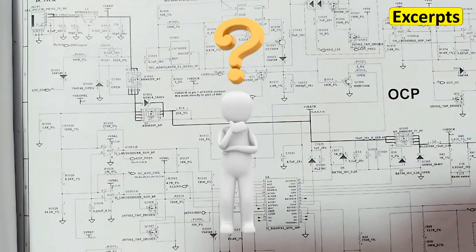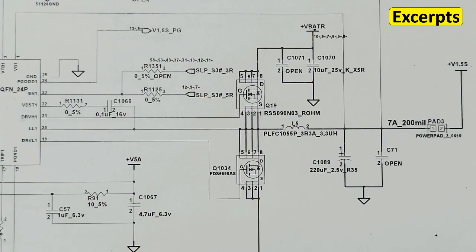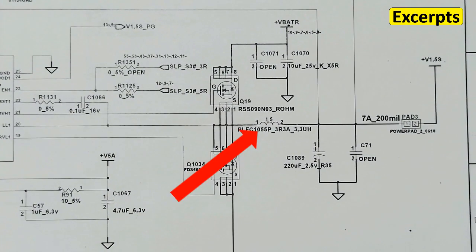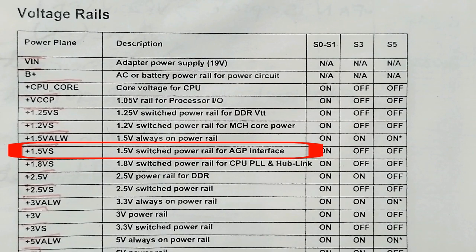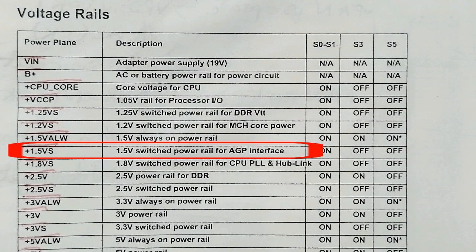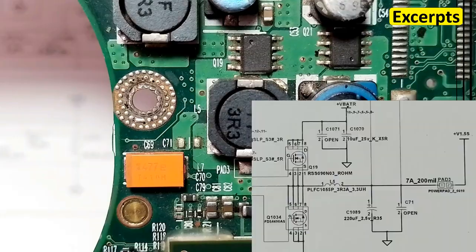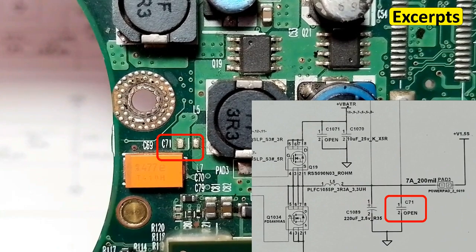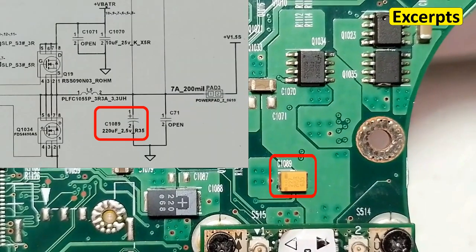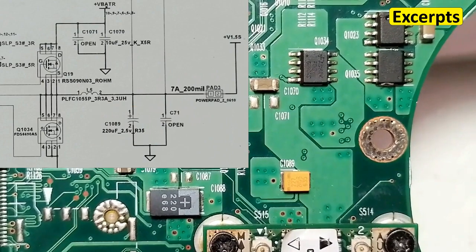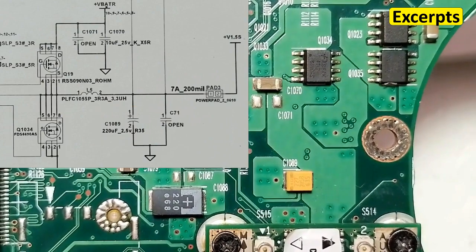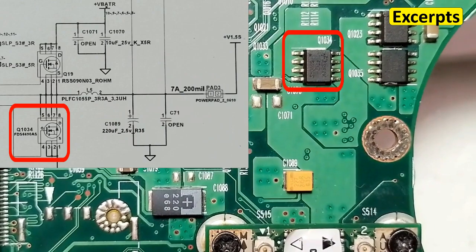Let's check which circuit L5 belongs to. We have L5 here. L5 belongs to the 1.5 volt power rail — the 1.5 volt switched power rail for the AGP interface, so this power is for the graphic cards. We have C71, which is not connected. Here we have C1089, which could be the failed or the shorted component. And we have Q1034, the MOSFET.